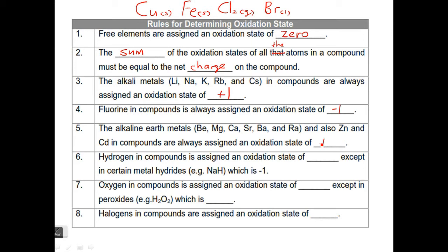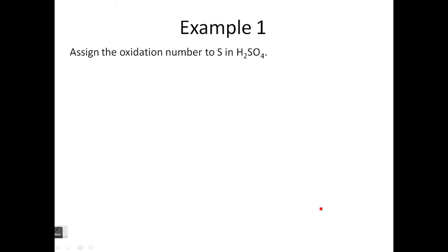Fluorine is negative one. The alkaline earth metals, plus two. Hydrogen is usually plus one except in something like NaH, in which it's negative one. Number seven, oxygen in compounds is assigned an oxidation state of negative two, except when it's in, for example, hydrogen peroxide, when it's negative one. And the halogens, chlorine, etc., are negative one.